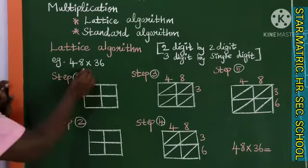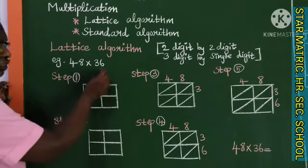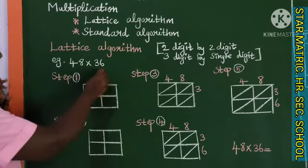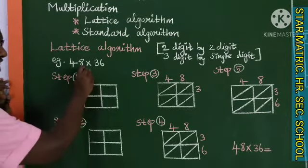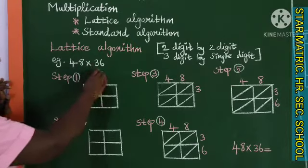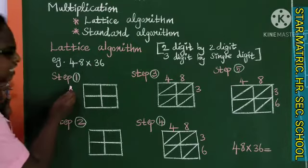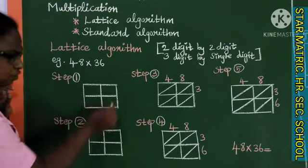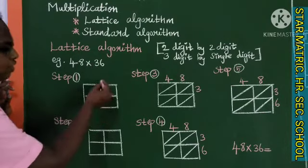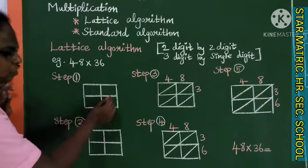The problem is 48 into 36. We are going to find out the product of 48 into 36. The first step is to draw a square and divide it.